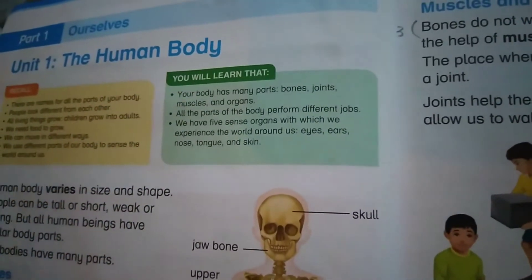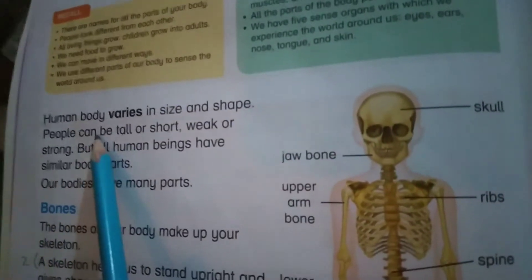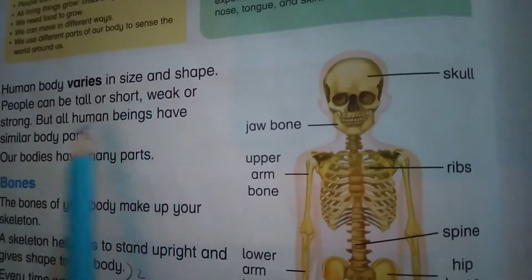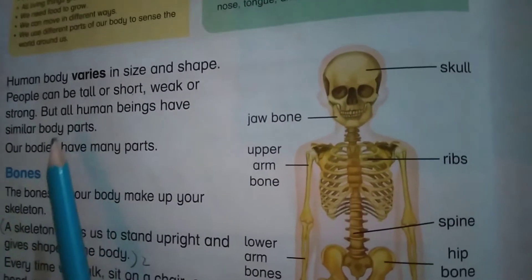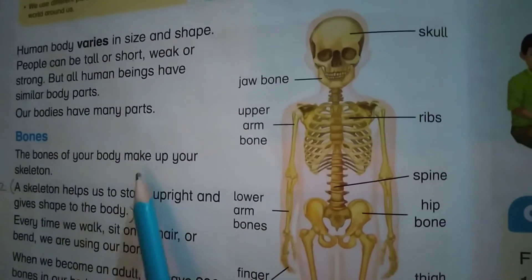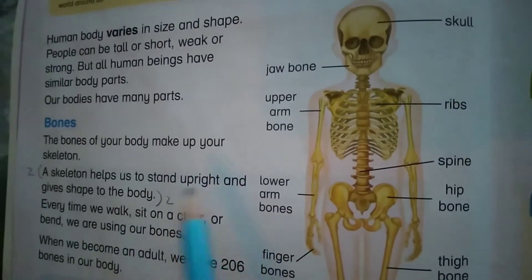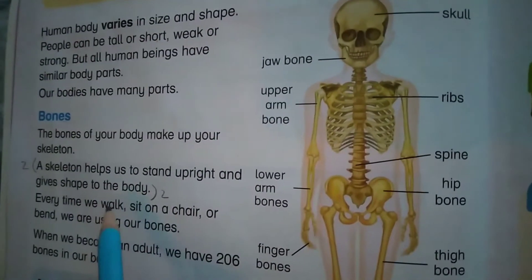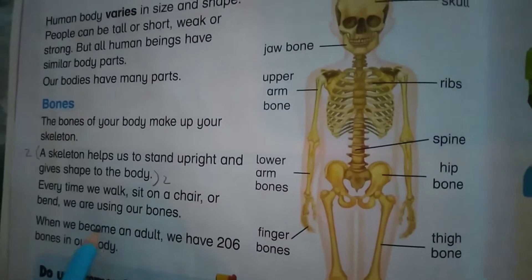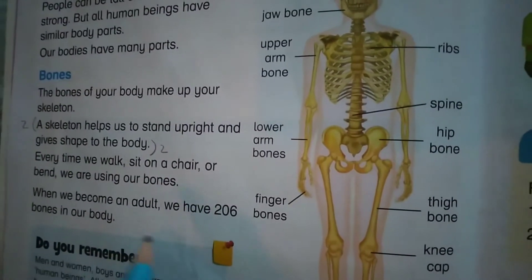The human body varies in size and shape. People can be tall or short, weak or strong, but all human beings have similar body parts. Our bodies have many parts. Bones — the bones of your body make up your skeleton. A skeleton helps us to stand upright and gives shape to the body. Every time we walk or sit on a chair or bend, we are using our bones.